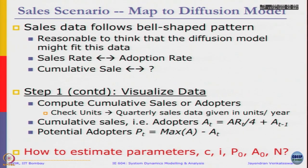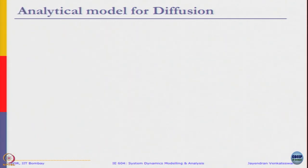Now, we need to pretty much estimate these parameters: C, I, P0, A0, and N from the data that is given. To estimate these parameters, we need to look at a bit of math. Let us go ahead and do that.